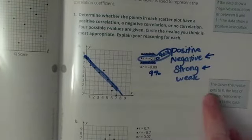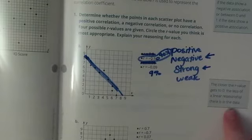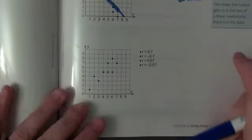Remember, the closer the R value gets to zero, the less of a linear relationship there is.